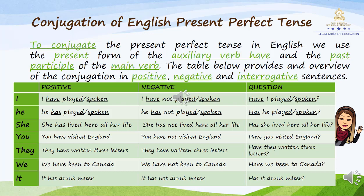In this table we have positive, negative, and question form sentences. I have played. I have not played. Have I played? Aquí utilizamos el pronombre 'yo' con el verbo 'jugar.' Yo he jugado. Yo no he jugado. ¿Puedo jugar? He has played. He has not played. Has he played? Él ha jugado. Él no ha jugado. ¿Puede él jugar?